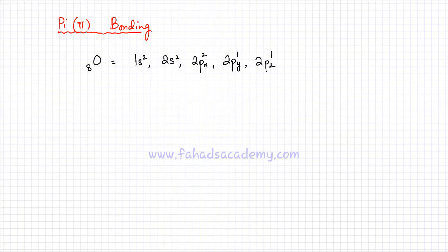In this lecture, I'm going to discuss pi bonding, which is the other type of bonding other than sigma bonding. There are two types of covalent bonds: one is sigma, and this one is pi. We have discussed sigma bonds in a previous lecture, so we're going to move on to pi bonds.